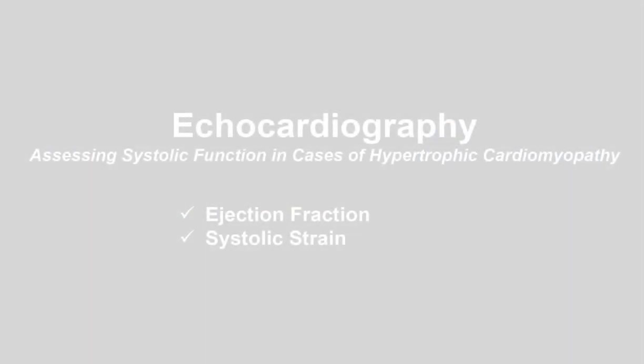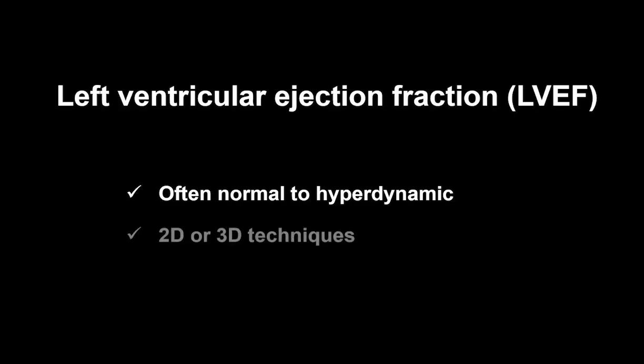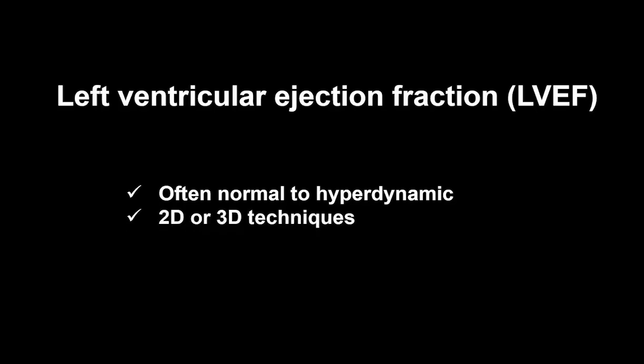The measurements used to assess left ventricular systolic function when a patient has hypertrophic cardiomyopathy are the ejection fraction and systolic strain. Often the left ventricle will be normal to hyperdynamic with regards to ejection fraction in patients with hypertrophic cardiomyopathy. 2D or 3D techniques can be used to calculate an ejection fraction.